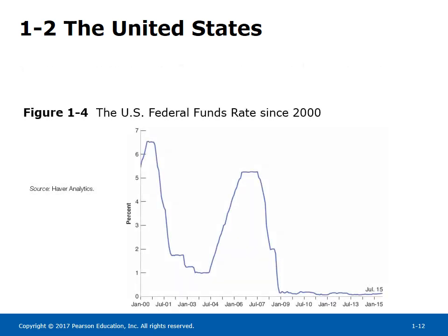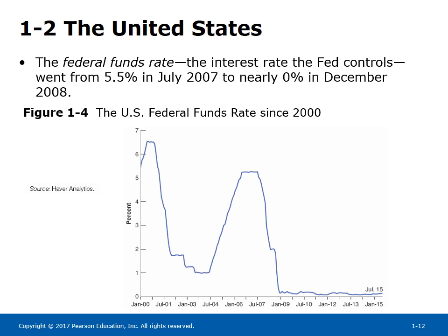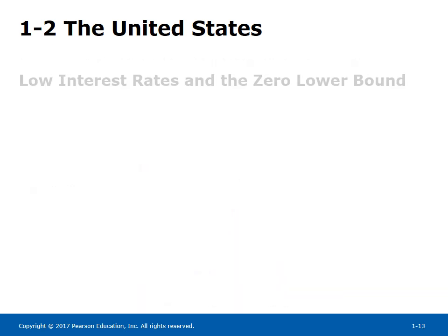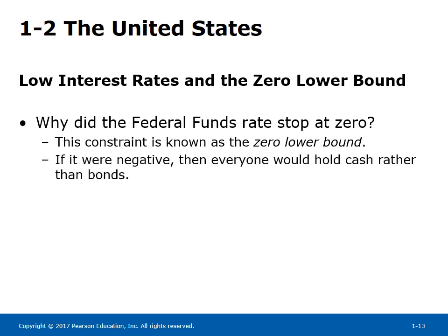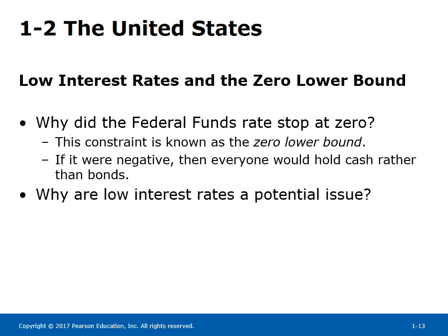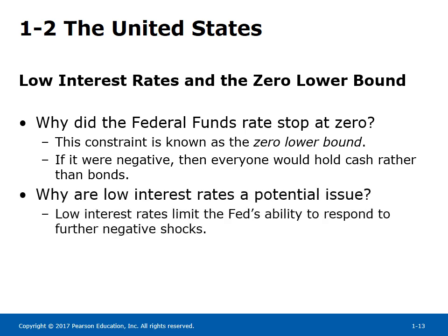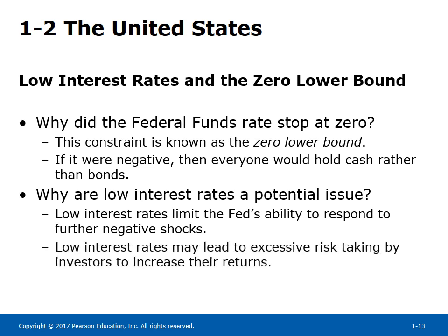Conventional expansionary monetary policy was used in the US to stabilize the economy, as shown in Figure 1-4. The federal funds rate was lowered from 5.5% in July 2007 to nearly 0% in December 2008. Why did the federal funds rate stop at zero? This constraint is known as the zero lower bound. If it were negative, then everyone would hold cash rather than bonds. Low interest rates limit the Fed's ability to respond to further negative shocks and may lead to excessive risk-taking by investors to increase their returns. The zero lower bound is a constraint since the Fed cannot increase aggregate demand by lowering interest rates any further.